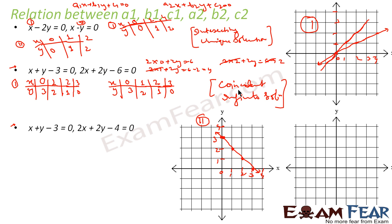Let's take one more equation: x plus y minus 3 equals 0 and 2x plus 2y minus 4 equals 0. I have now taken three sets of equations, all of different kinds. The first was intersecting with a unique solution, the second is coincident with infinite solutions, and this third equation will be a parallel case — parallel lines with no solution and no intersection.